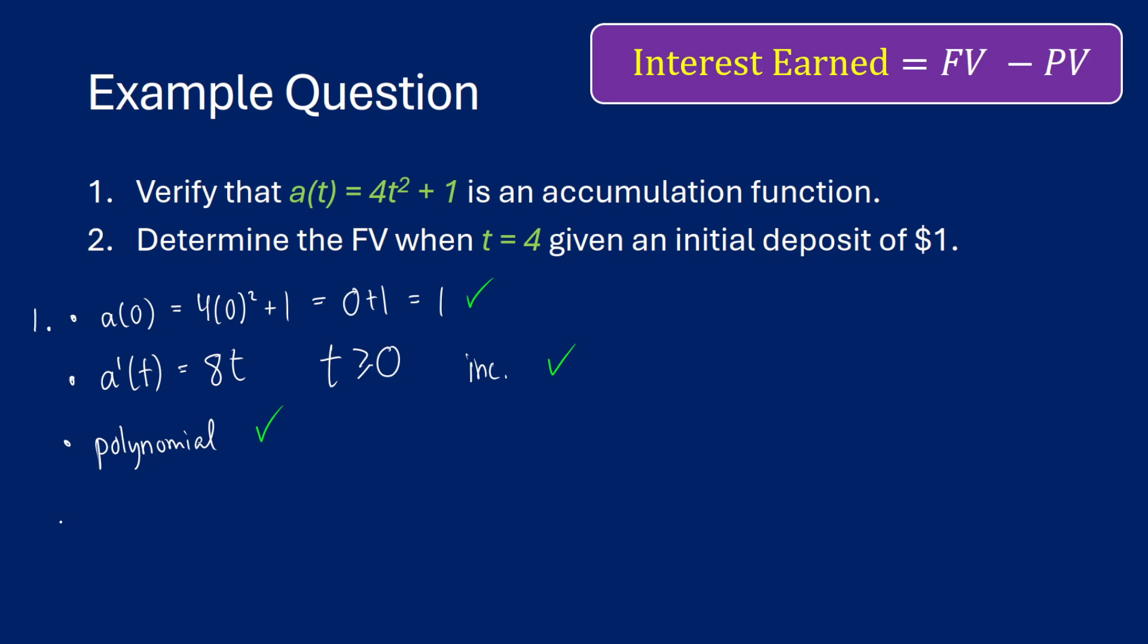Now, the second thing is asking, what is the future value when t is equal to 4? Given an initial deposit of $1. So basically what we're doing here is we're just finding out what a(4) is.